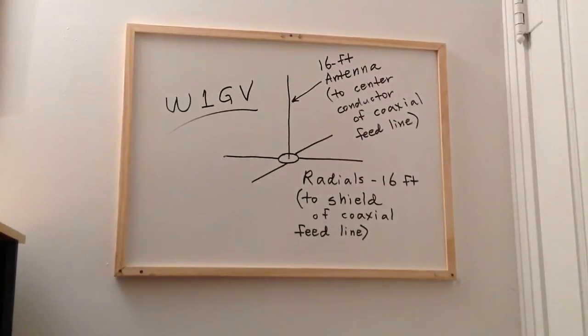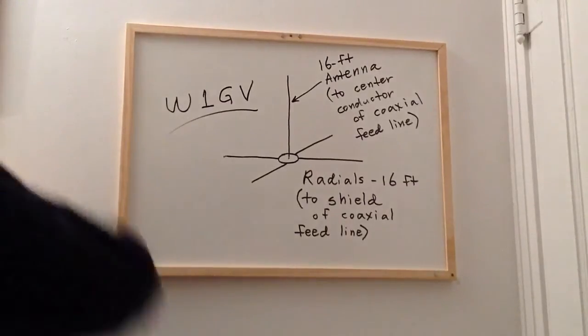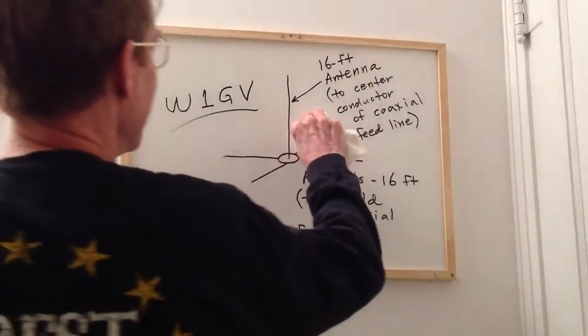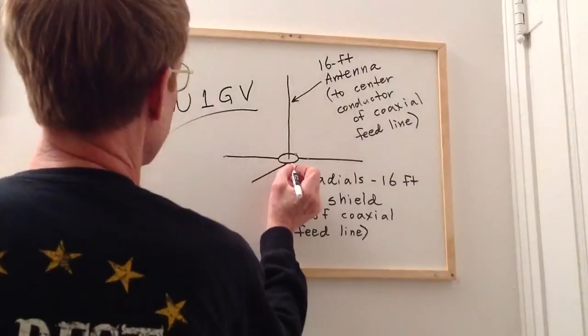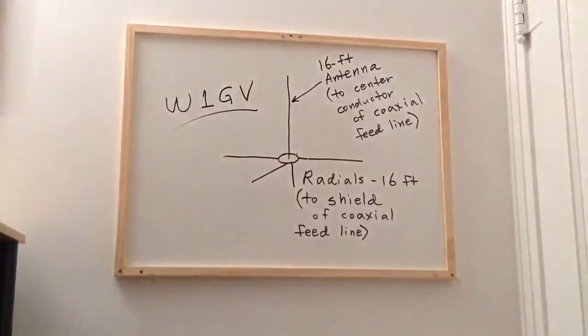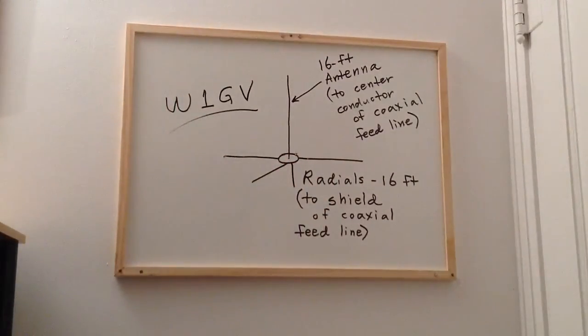And four 16-foot radials underneath the deck. Actually, because the antenna is mounted on the edge of the deck, radials were all on one side.